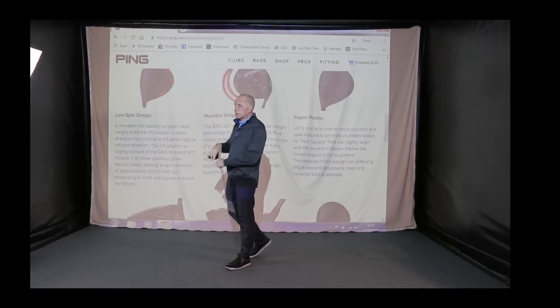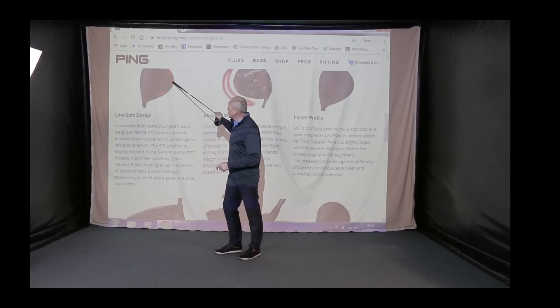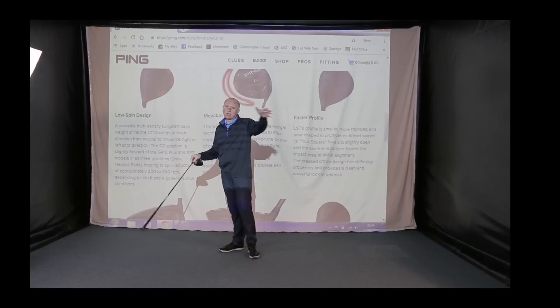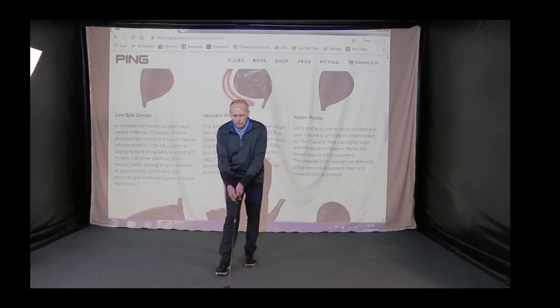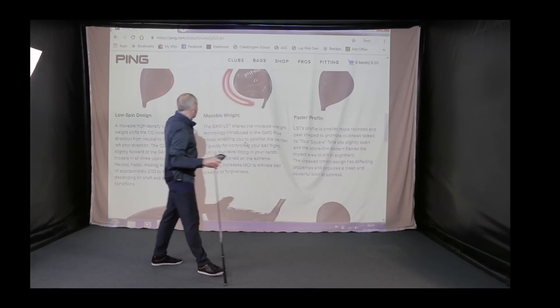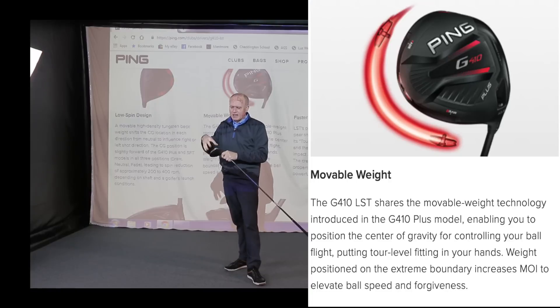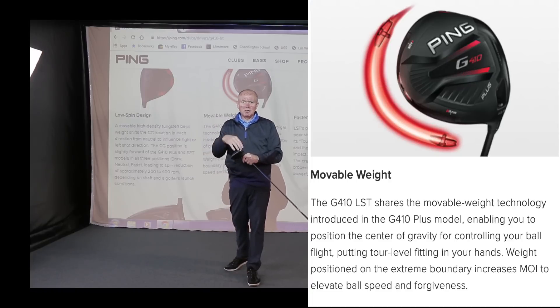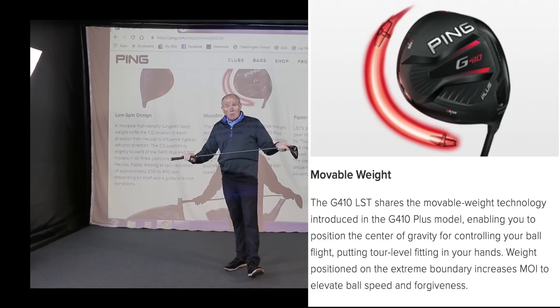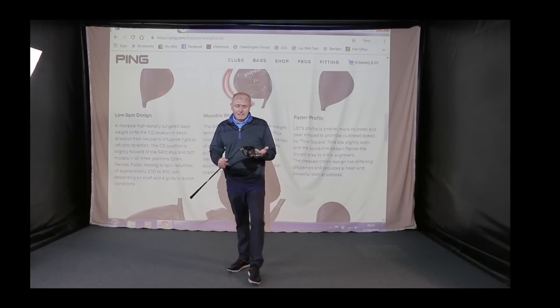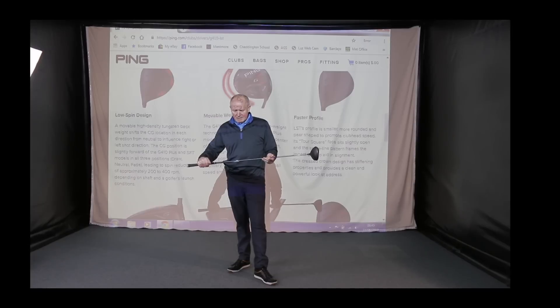So CG, center of gravity, is moving forward. The more you move center of gravity or weight back in a driver, the higher it tends to launch is the general idea. And the more you move the weight forward, the lower it launches. That's the basics of it. There's probably a bit more to it than that, but that's how I see it. Loads of other stuff I could tell you about, but you know all about it. Basically, the weight's in the back here. You can put it to draw and fade and neutral. There we go, that's basically in a nutshell. Leaves me just to go ahead, set this driver up and hit it.